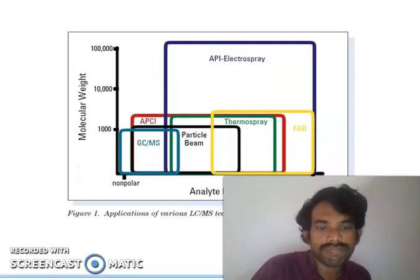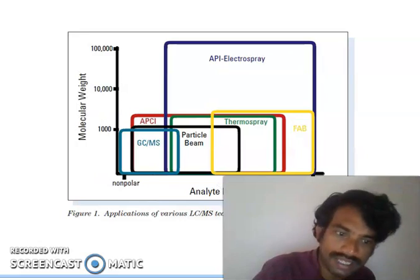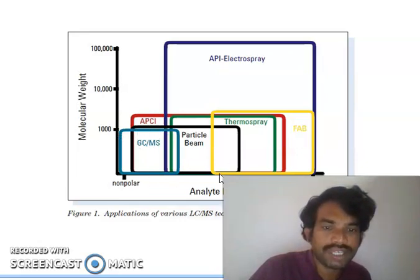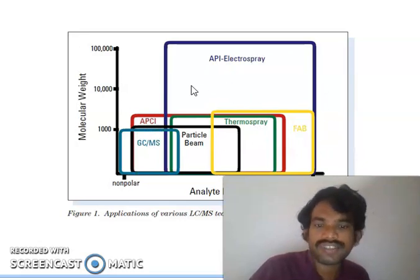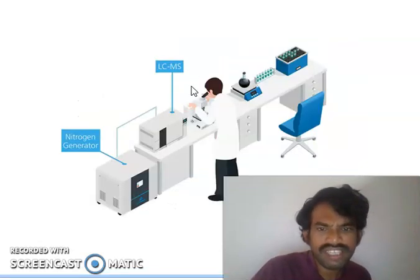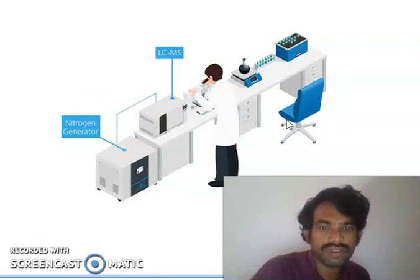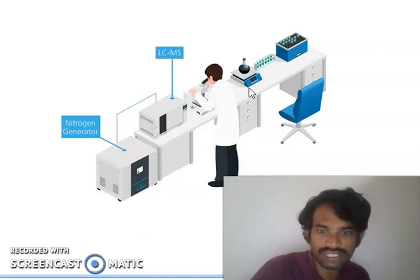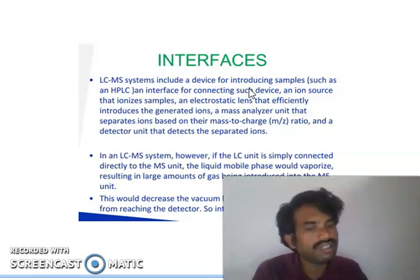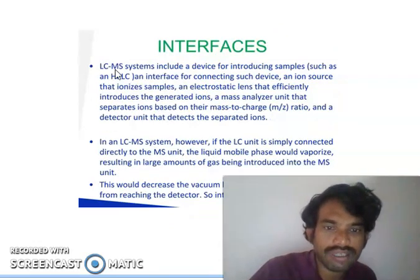One image indicates the relationship of molecular weight versus analyte polarity. Non-polar and polar components are shown — with GC-MS you can analyze up to 10,000, and APCI, particle beams, thermospray, and electrospray can go up to 1 kDa. This figure shows how much mass you can analyze across different techniques. You can also see an actual image of an LC-MS system with a nitrogen generator, showing how liquid chromatography is combined with mass spectroscopy — this connection is called the interface.